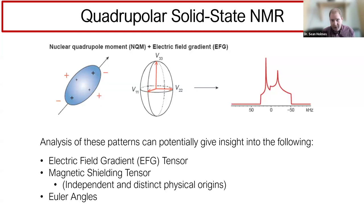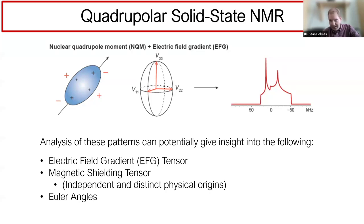We'll be focusing on solid-state NMR using quadrupolar nuclei—any nucleus with spin greater than one-half. These nuclei have a quadrupole moment that interacts with the electric field gradient at the nucleus, appearing as a central transition powder pattern influenced by the second-order quadrupolar interaction. Analysis of these materials can provide the electric field gradient tensor, the magnetic shielding tensor, and the Euler angles relating their relative orientations. Importantly, these two interactions have independent and distinct physical origins.